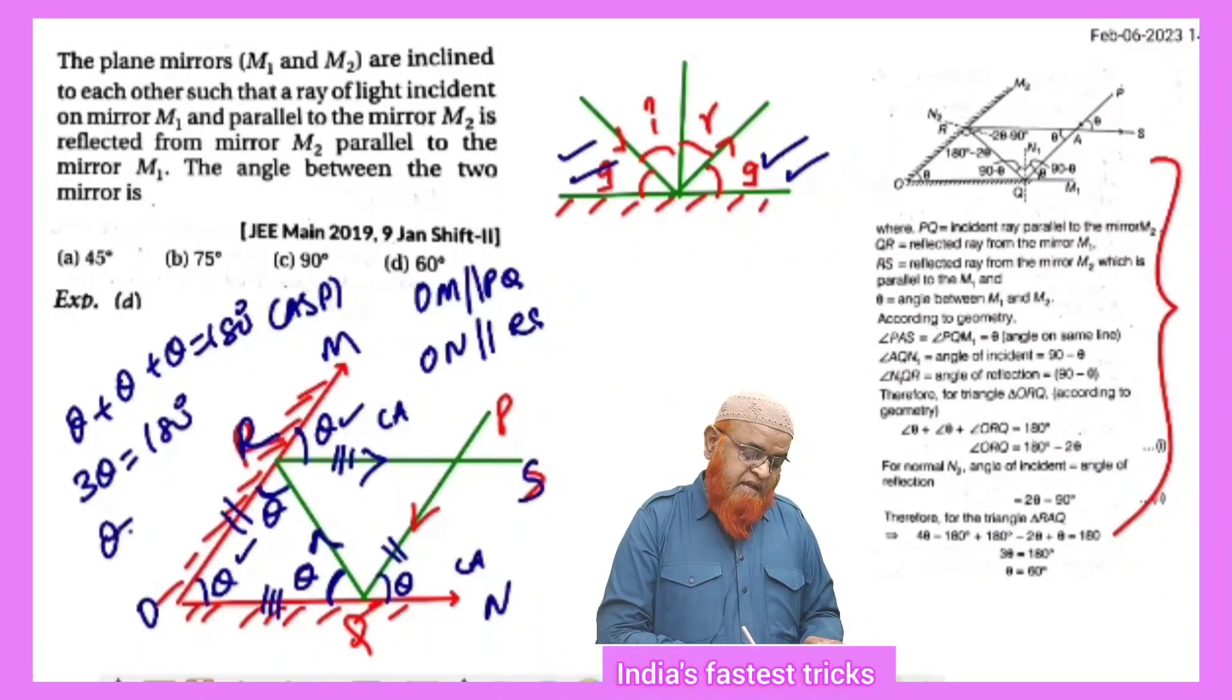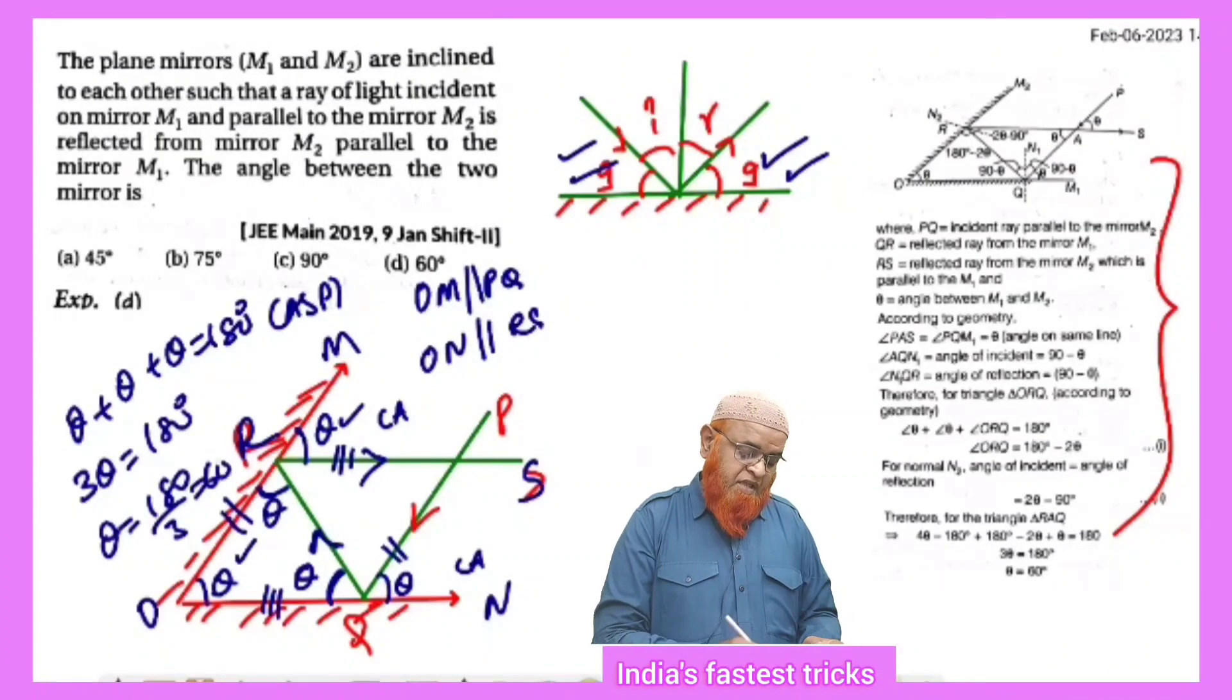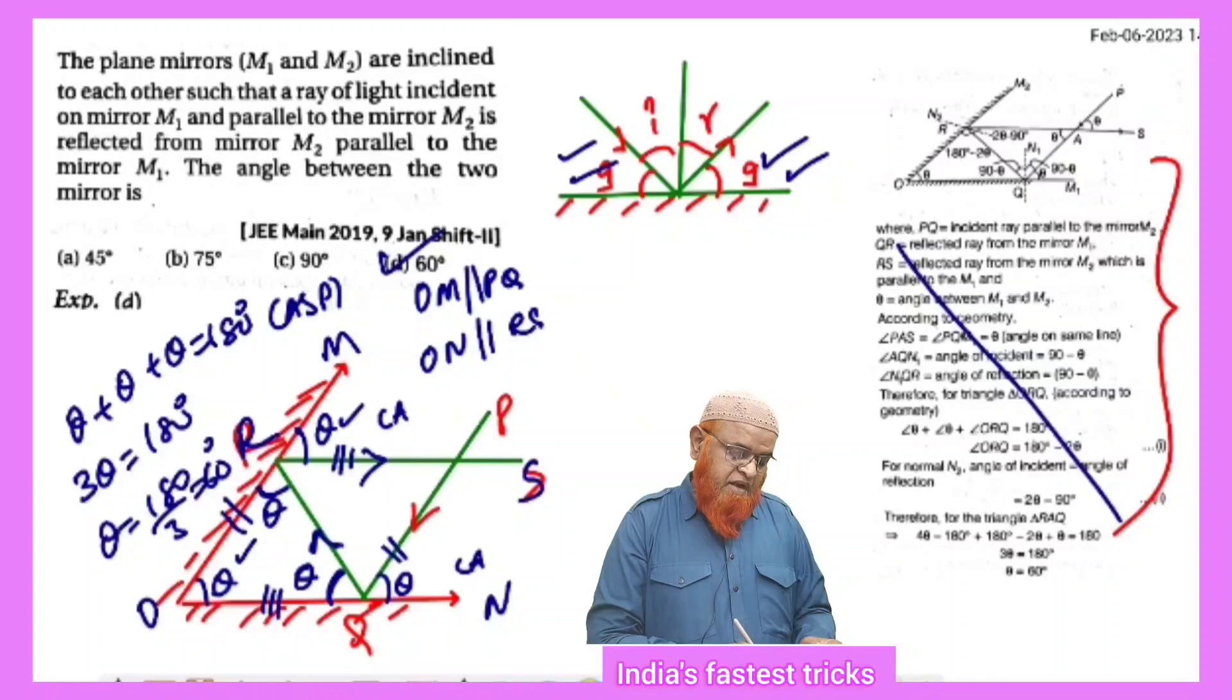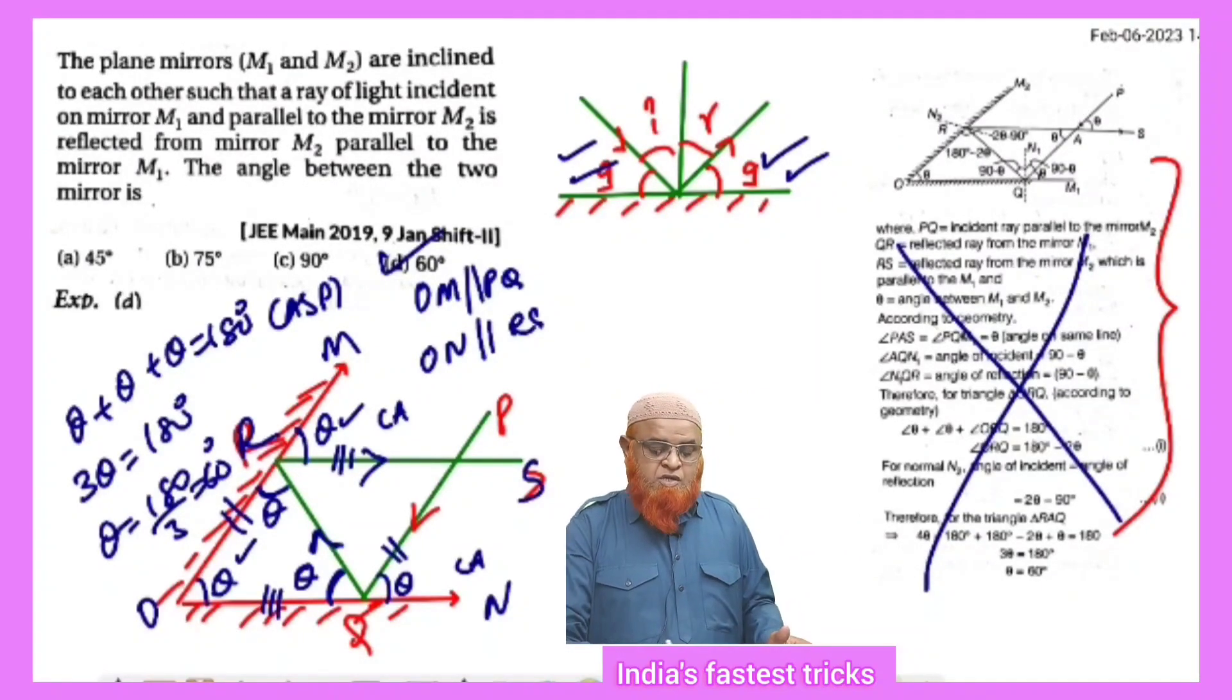Theta plus theta plus theta equals 180 degrees - this is called angle sum property. Therefore, 3 theta equals 180 degrees, so theta equals 180 divided by 3, which equals 60 degrees. That's your answer using such a simple method.